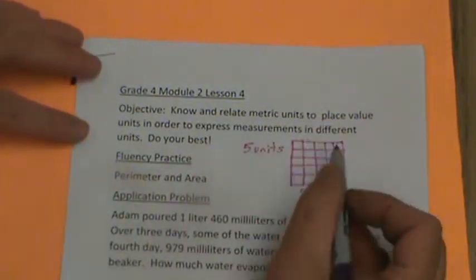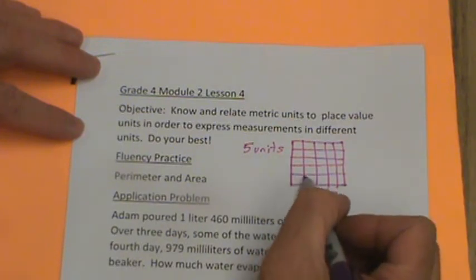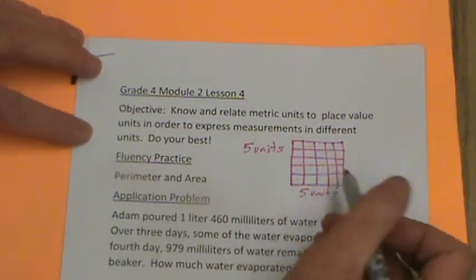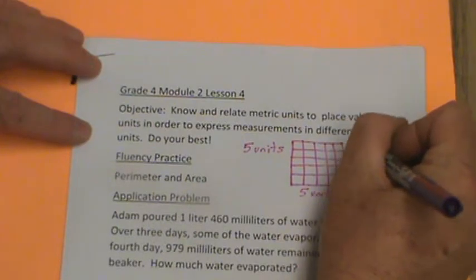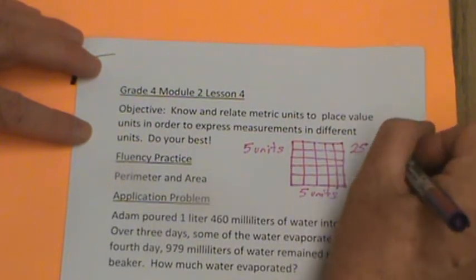So we would go, excuse me, we would just go one, two, three, four, five times one, two, three, four, five. Five times five is 25 square units.